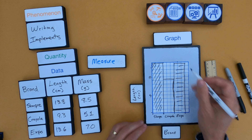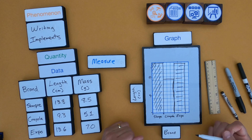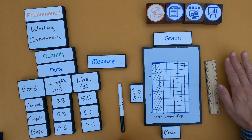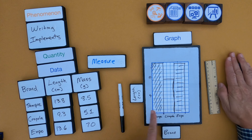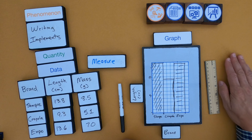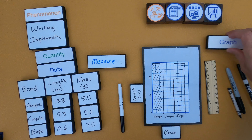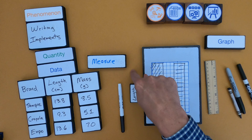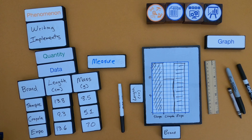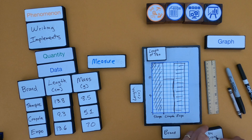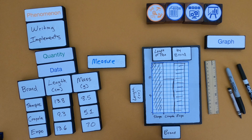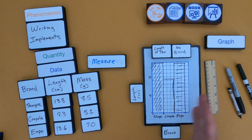I'm marking the length of each implement on the y-axis and corresponding it to the brand on the x-axis. You can see that from the data table alone, it doesn't pop out which ones are longer — but from the graph you can clearly see that the Sharpie and the Expo are really close, and both are longer than the Crayola. My graph is almost done, but I need a title. A nice way to write the title is to combine what's on the y-axis and x-axis: 'Length of Each Implement by Brand.'